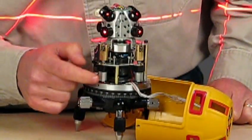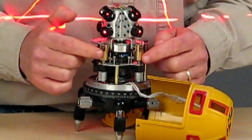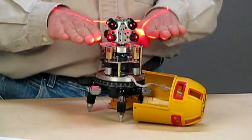The servo motors are here and here. They push up and down on these rods and bring the upper part of the assembly to level.